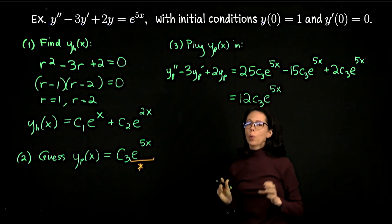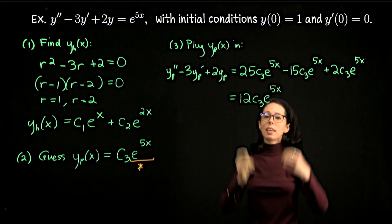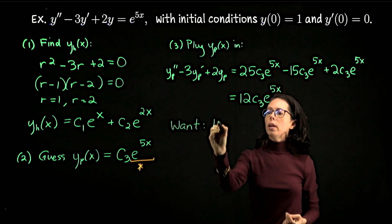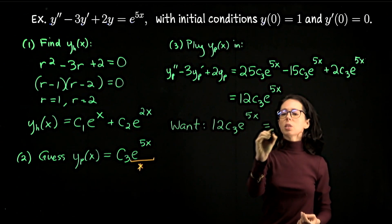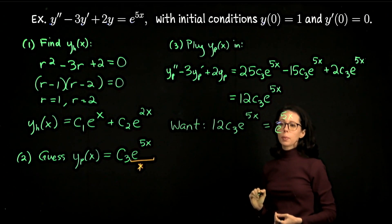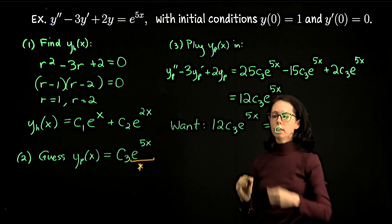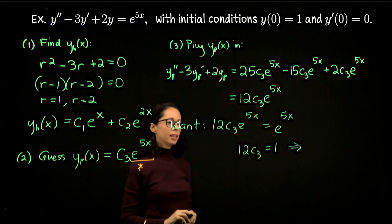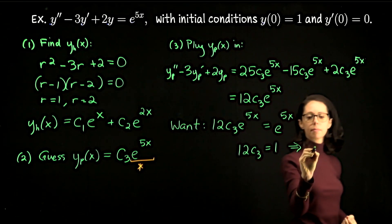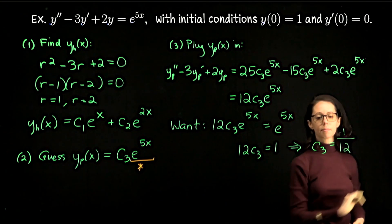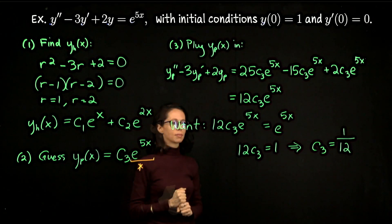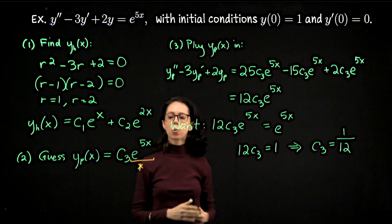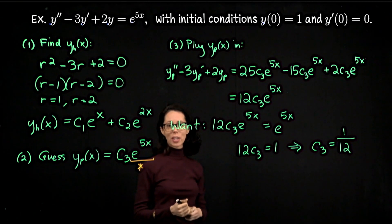That's the left-hand side. We want it to equal the right-hand side e to the 5x. So we need 12c3 e to the 5x equal to e to the 5x, which means 12c3 equals 1, so c3 equals one-twelfth. As a result of steps 1, 2, and 3, we have our homogeneous solution and our particular solution one-twelfth e to the 5x. Adding them together gives the overall general solution.